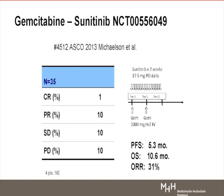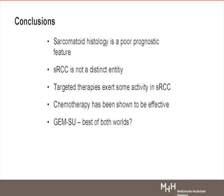The latest approach is gemcitabine in combination with sunitinib — the best of both worlds. Using gemcitabine infusion on day one and day eight with a two-week schedule of sunitinib in 35 patients: 11 patients responded, progression-free survival is 5.3 months, response rate is 31 percent, and overall survival approaching 11 months. In conclusion, sarcomatoid histology is a poor prognostic feature not bound to a single entity. Targeted therapies show some activity but are inferior. Chemotherapy is effective, and gemcitabine plus sunitinib currently seems to be the best of both worlds.